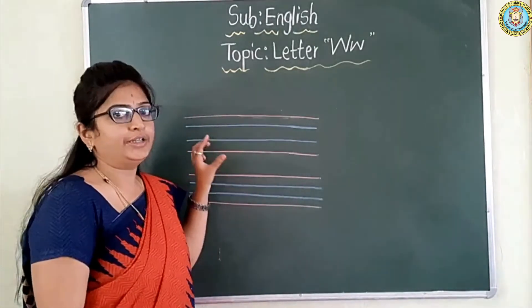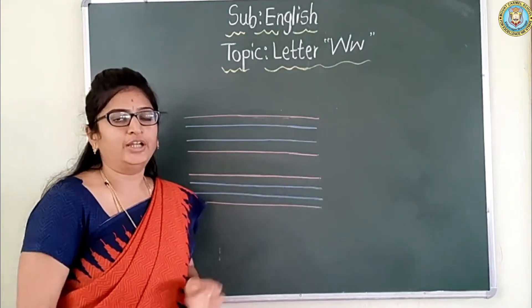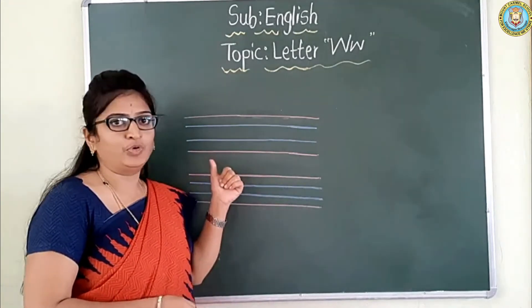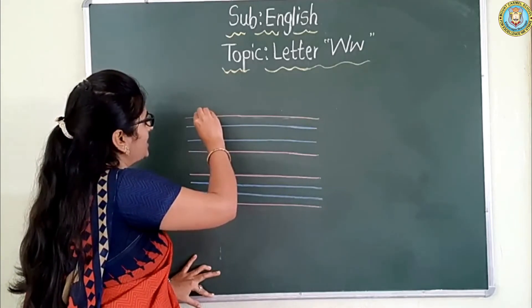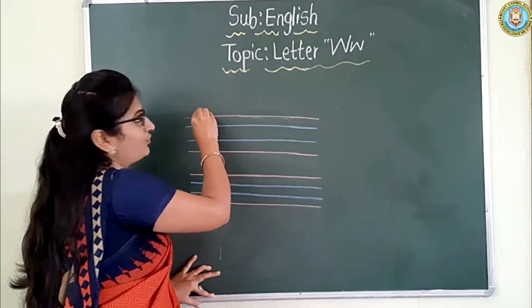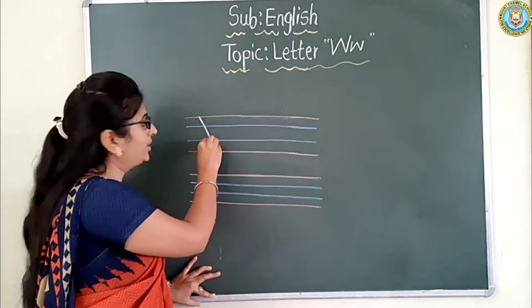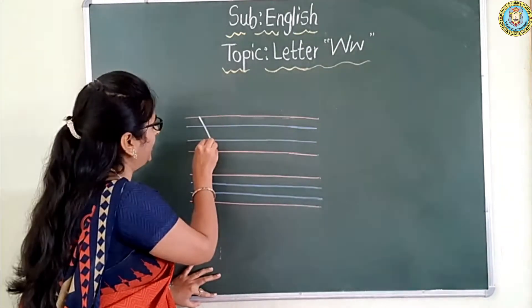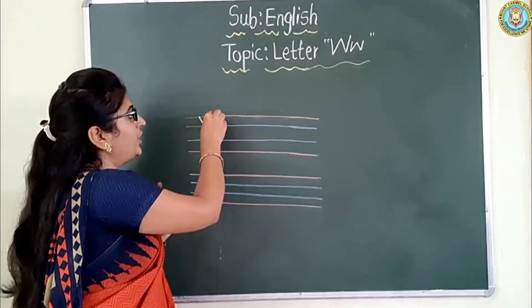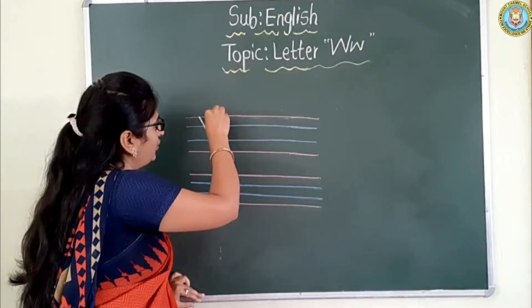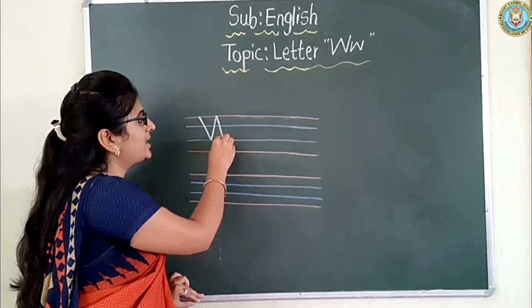Okay, see here. We already know that there are four lines: first red line, first blue line, and second blue line. Now I will teach you capital W in the four-line book. First, you start from the first red line. Write the slanting line to touch the second blue line. Then again you go up with another slanting line.